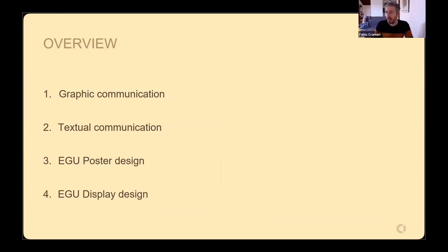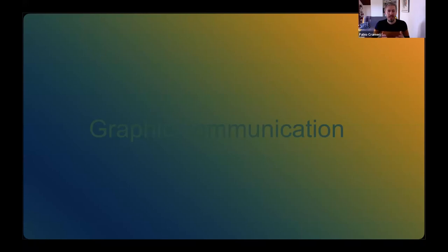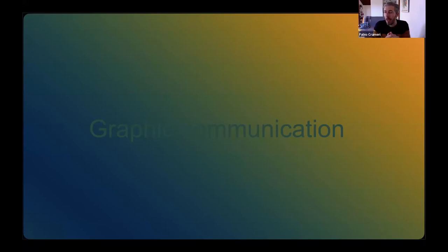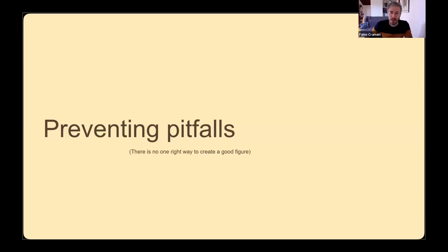First up: graphic communication. When you look at this 'graphic communication' text it appears to have two different colors or a gradient, but it is actually the same blue-green color throughout. The gradient in the background makes it look like a gradient on the text as well. Remember: the background changes what you present. Also, if you look long enough at this slide and then I change to the next one, it looks as if this slide also has a gradient in the background — because your eyes got used to something and now pretend to see something else.